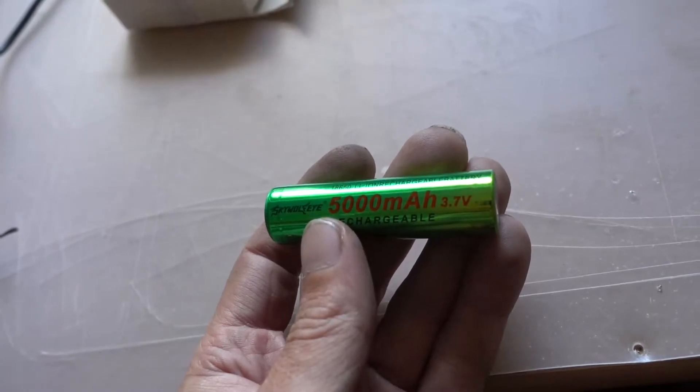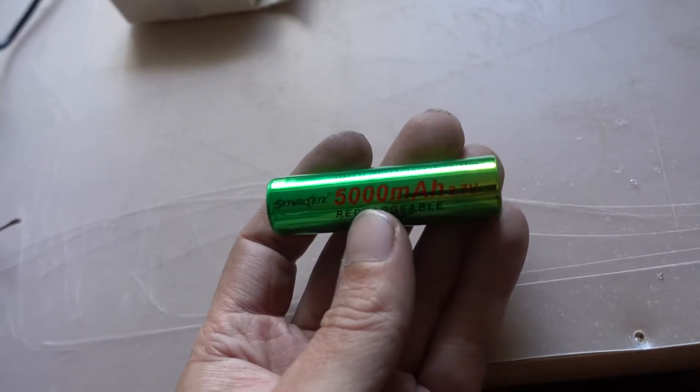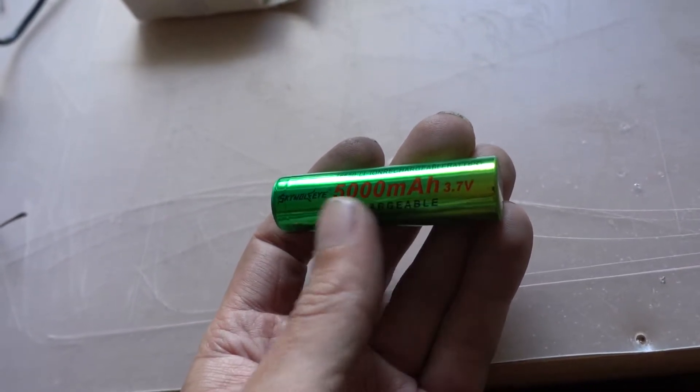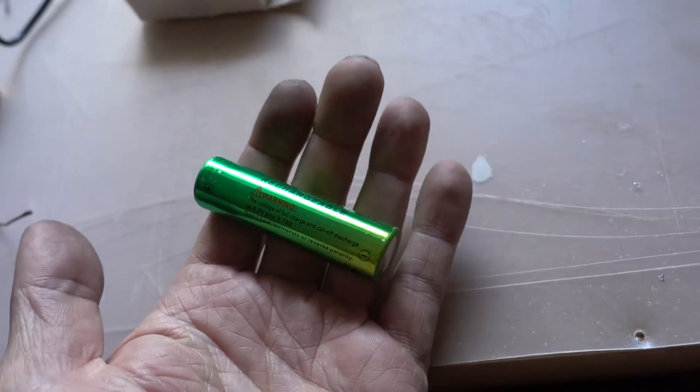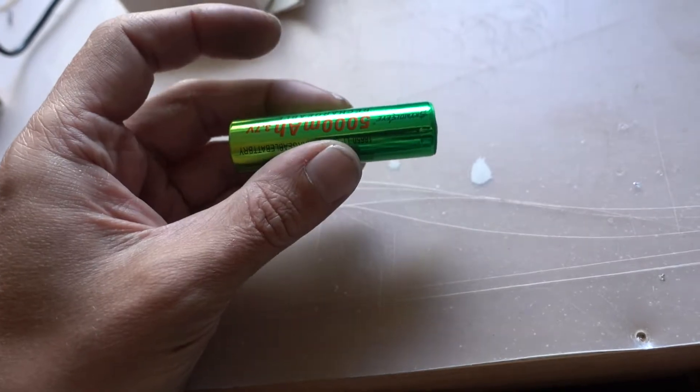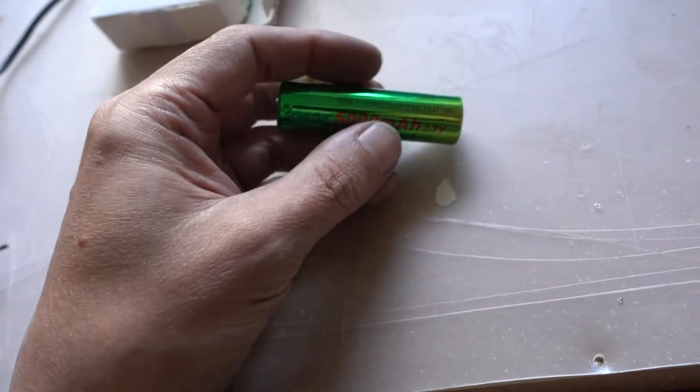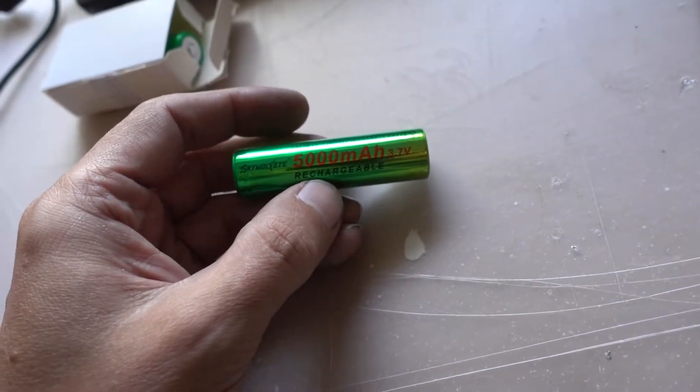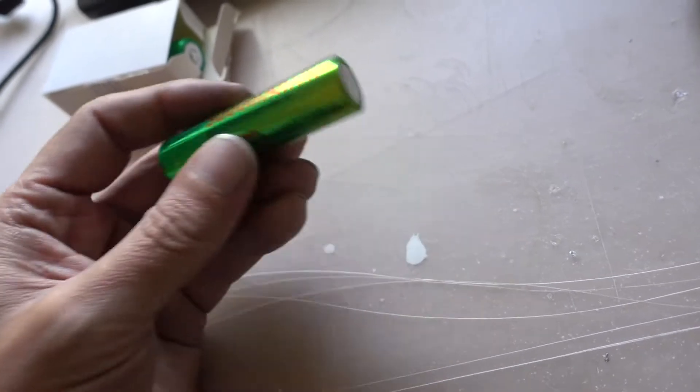Pretty sure they are not 5000, that's total bullshit. Normally that size is around 3000. But I measured them when they arrived and they were nearly all above 4 volts, which means they are kind of fresh.